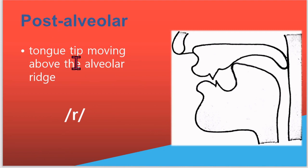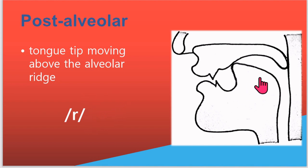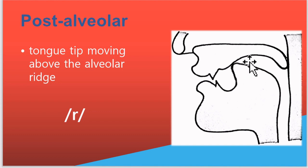Post-alveolar sounds: in English there is only one post-alveolar sound, which is the R sound. In producing the English R sound, the tongue will curl and move backwards — it will not touch anywhere, it will curl and move backwards in the production of this post-alveolar sound. We will talk more about R later.